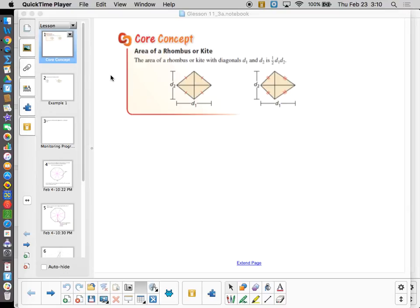Today's topic is the area of a rhombus or a kite, and we're going to start to get into the area of just any old regular polygon as well. So, a couple big concepts here.